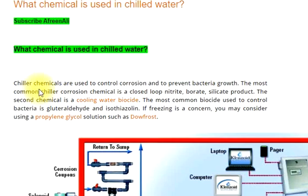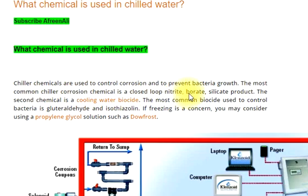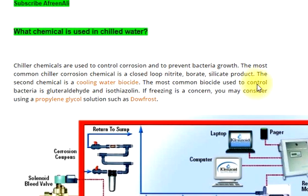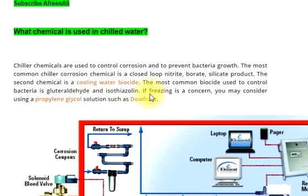Chiller chemicals are used to control corrosion and to prevent bacteria growth. The most common chiller corrosion chemical is a closed-loop nitrite or a silicate product. The second chemical is a cooling water biocide. The most common biocide used to control bacteria is glutaraldehyde and isothiazolin.